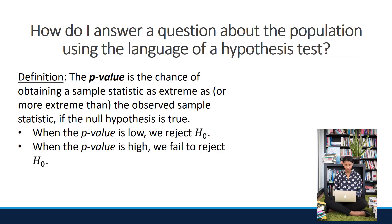Definition: The p-value is the chance of obtaining a sample statistic as extreme as or more extreme than the observed sample statistic if the null hypothesis is true. When the p-value is low, we reject H₀. When the p-value is high, we fail to reject. If the p-value is small, then a statistic as extreme as that observed would be unlikely if the null hypothesis were true, providing statistically significant evidence against the null. The smaller the p-value, the stronger the evidence against the null hypothesis in favor of the alternative.